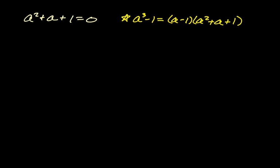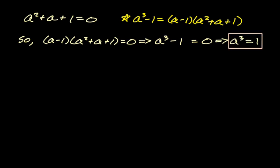We can take our given and just multiply it by a minus one. So I'm going to say that a minus one times a squared plus a plus one must also equal zero. And from there we can replace the left-hand side with a cubed minus one. So a cubed minus one is equal to zero. If that's the case, then we actually know that a cubed is equal to one.